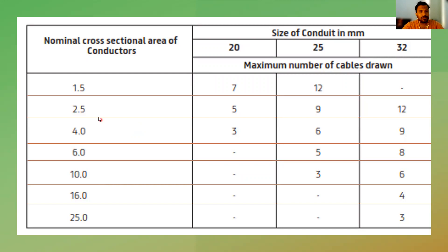So now we will see a table which differentiates between the 20, 25, and 32 mm conduits. And in this row, you will see the cross-sectional area. So here is the chart.